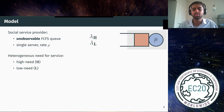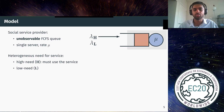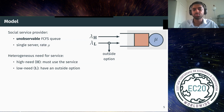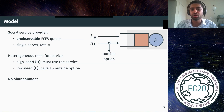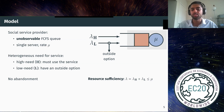We assume a heterogeneous set of users where the type of each user determines their need for the service. We assume two types: high-need users who must use the service, and low-need users who have an outside option and can potentially be incentivized to forego using the service. Arrivals for each type follow a Poisson process with rates lambda_h and lambda_l. For this talk I assume no abandonment, so any user who joins the queue will wait until service. We also make a resource sufficiency assumption: the total arrival rate of all users is less than or equal to the service rate, so the system is not already overwhelmed by demand.